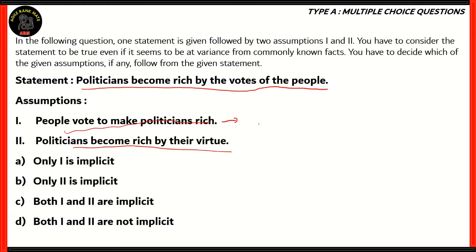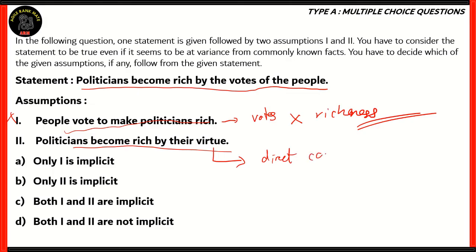People vote in order to make sure that those guys are accountable. The number of votes that a politician gets does not equal richness, and votes are not calculated as a measure of richness. So the assumption here isn't implicit. Assumption two — politicians become rich by their virtue — is a direct contradiction to the statement, which says politicians become rich by the votes of the people. So assumption two is also not implicit.